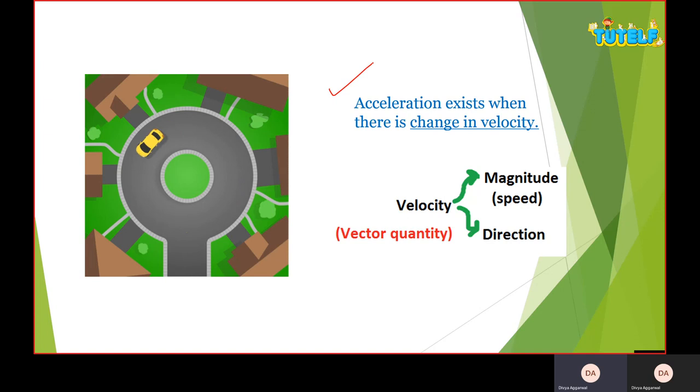So here you can see a car that is moving. The direction you can see is continuously changing - the direction of motion is always changing. Now if I say that I only change the direction of speed, then my velocity is changing because velocity is a vector quantity which depends on the magnitude and the direction.